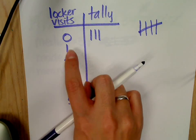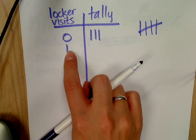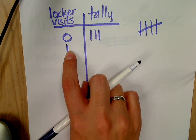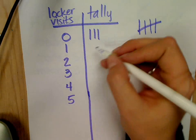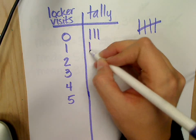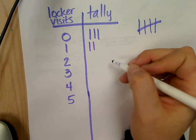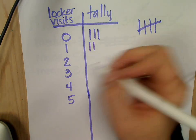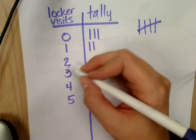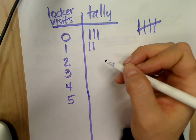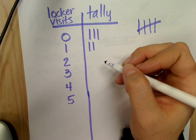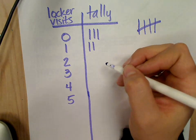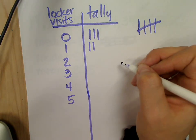Then how many people visited their locker once? Two people. So how many tallies do I make? Two. How many twos are in my list? Count them up - a lot.